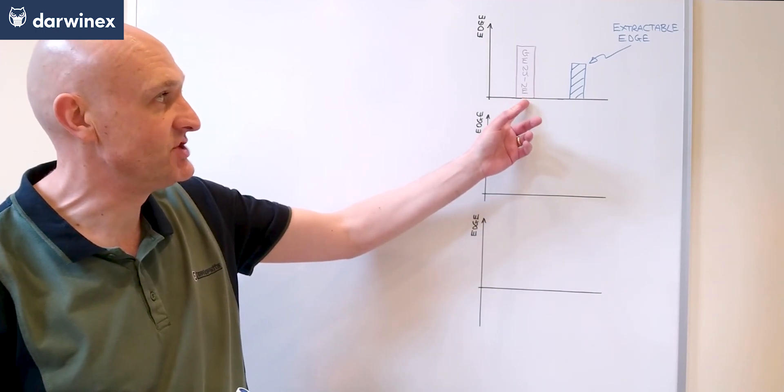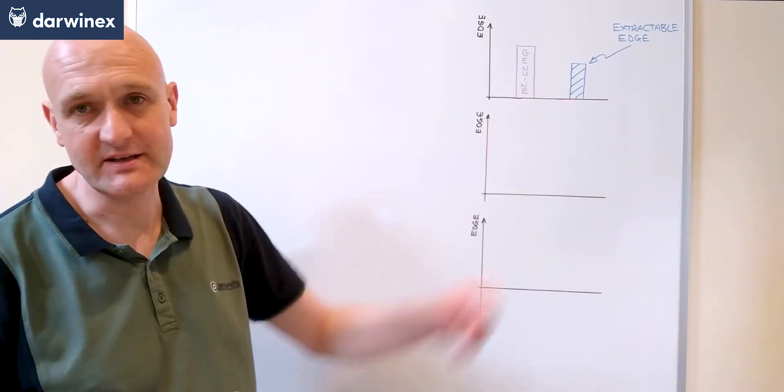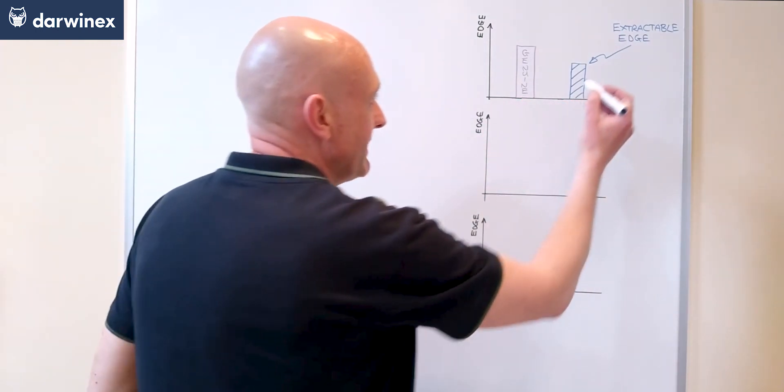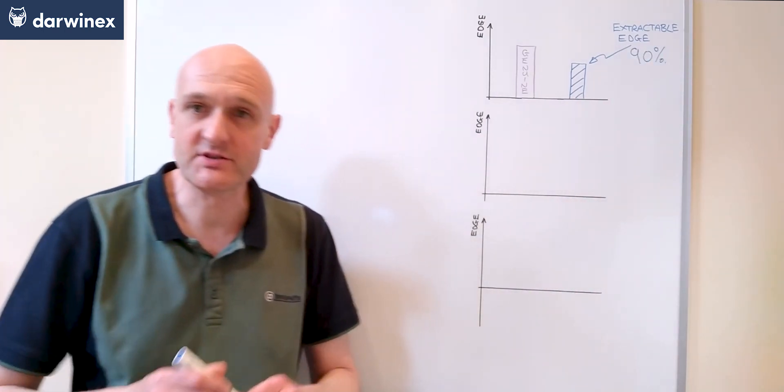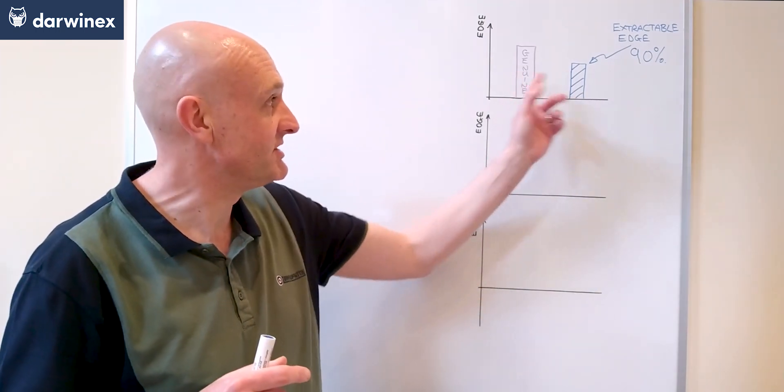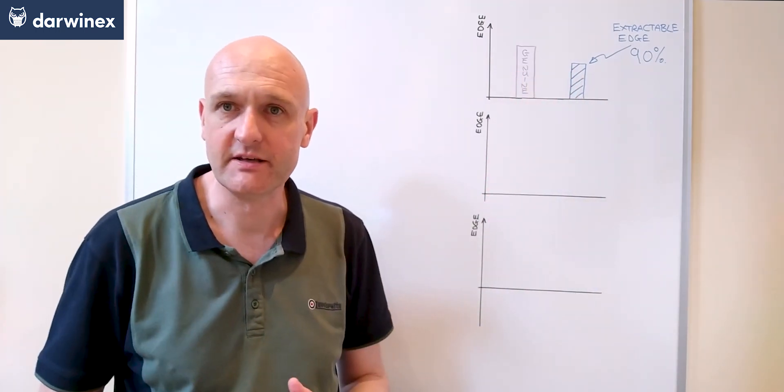So here for example, if we have a genuine edge, then what we said is that we will try to extract in the region of 90 percent of that genuine edge out of the system.